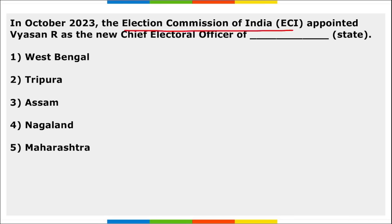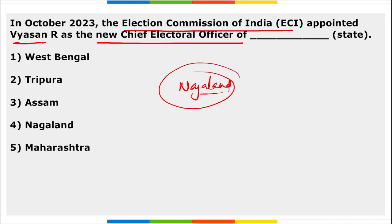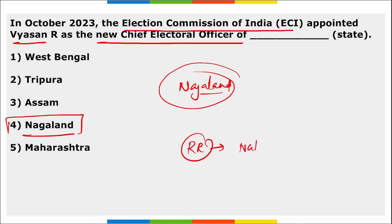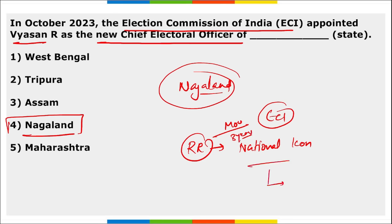Next, the Election Commission of India appointed Vyasan R as the new Chief Election Officer of Nagaland State. Also, Rajkumar Rao has been appointed as the national icon by the Election Commission of India, and this MOU between them has been signed for 3 years. Another national icon recently appointed was Sachin Tendulkar.